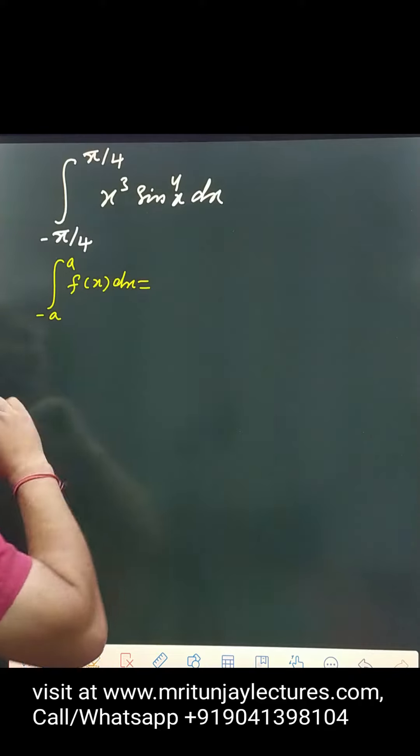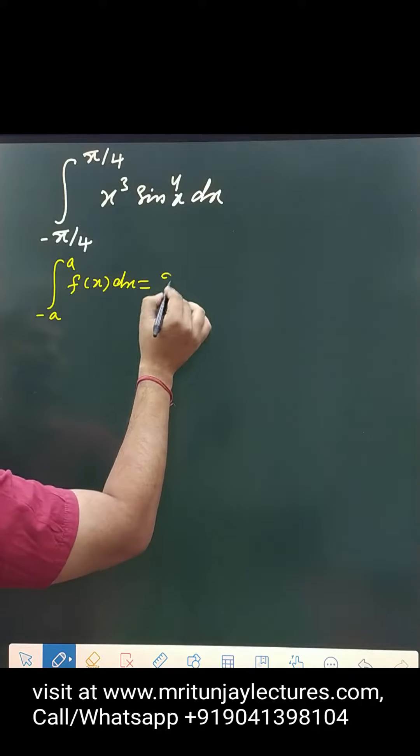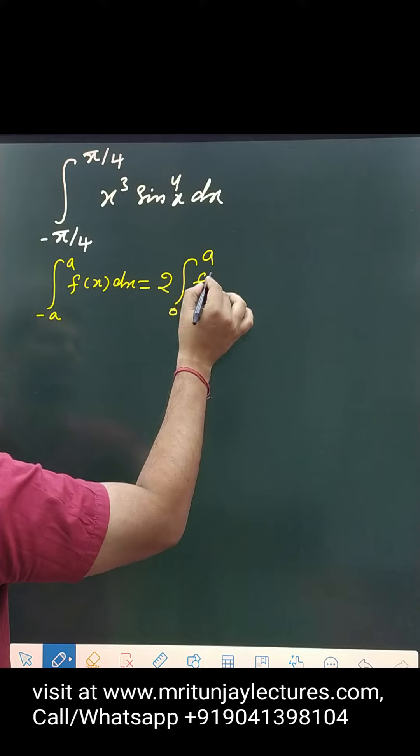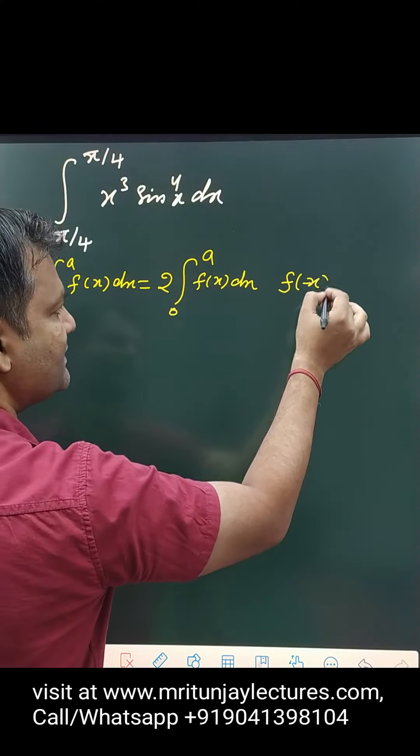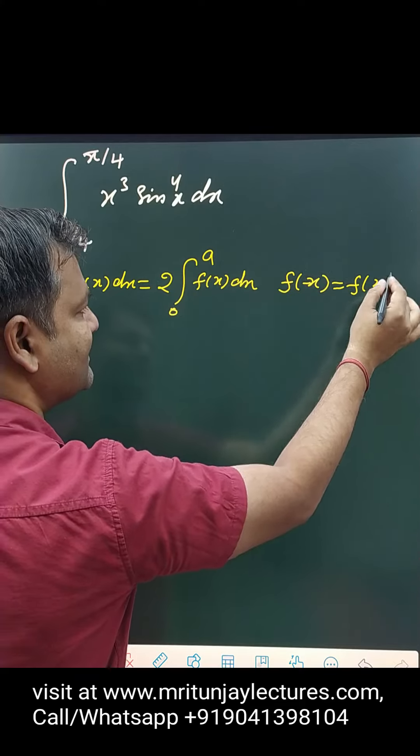If f of x is even function, then that one returns 0 to a f of x dx. Even function means f of minus x will be equal to f of x.